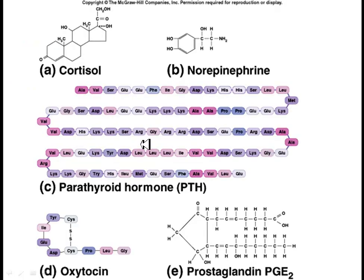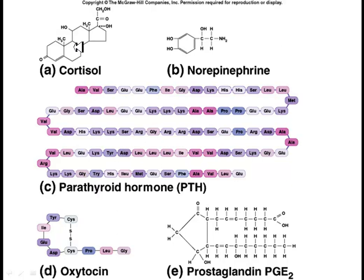Looking at some examples: the protein-based hormones like oxytocin are made up of a chain of amino acids and are very small. Parathyroid hormone is quite large but is still just a chain of amino acids — both are non-steroid hormones. Cortisol, derived from cholesterol, is a good example of a steroid-based hormone.